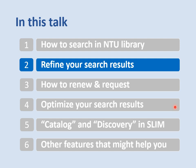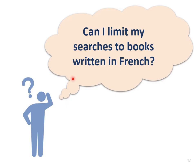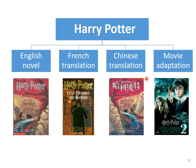In the second part, I will introduce how to refine the search results. If I want to find books written in French but I get a large number of results on SLIM, can I limit my search to books written in French? Let me give you an example. As we know, Harry Potter is an English novel. It is translated into different languages such as French and Chinese, and it also has movie adaptations. Now I want to find the French translation.